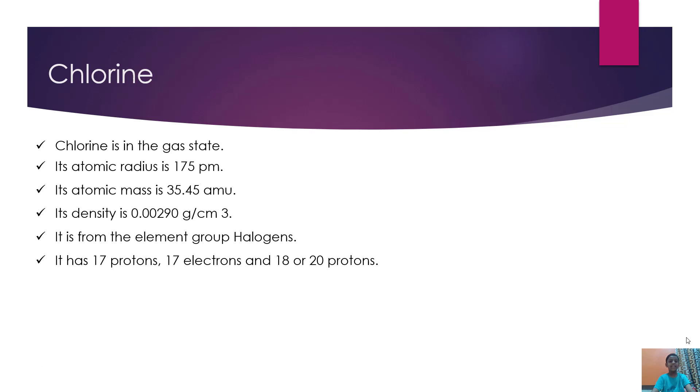Chlorine is in the gas state. Its atomic radius is 175 pm (picometers). Its atomic mass is 35.45 amu (atomic mass units). Its density is 0.00290 g/cm³. It is from the element group halogens. It has 17 protons, 17 electrons and 18 or 20 neutrons.